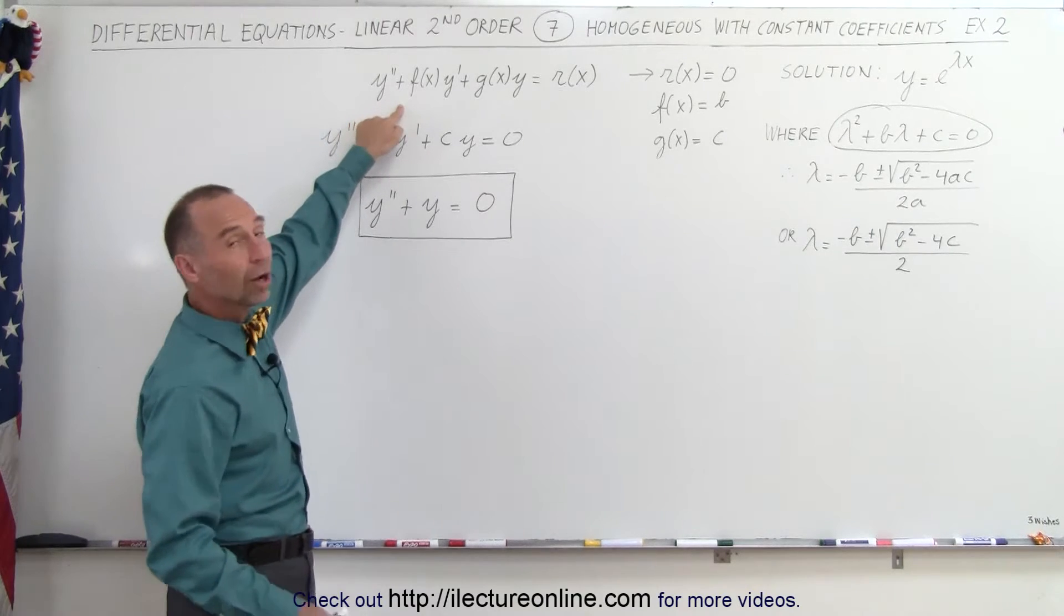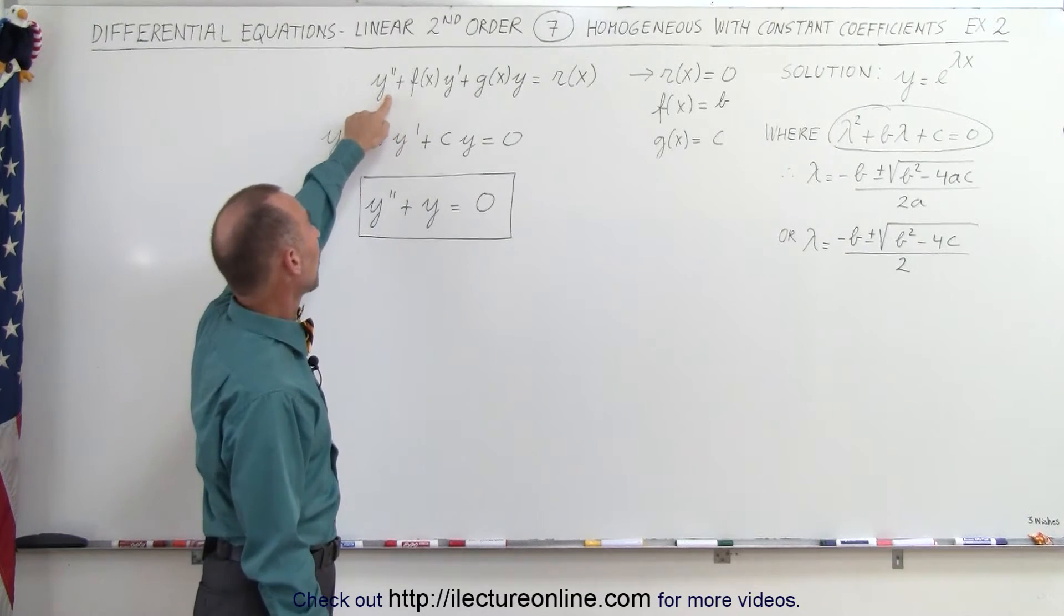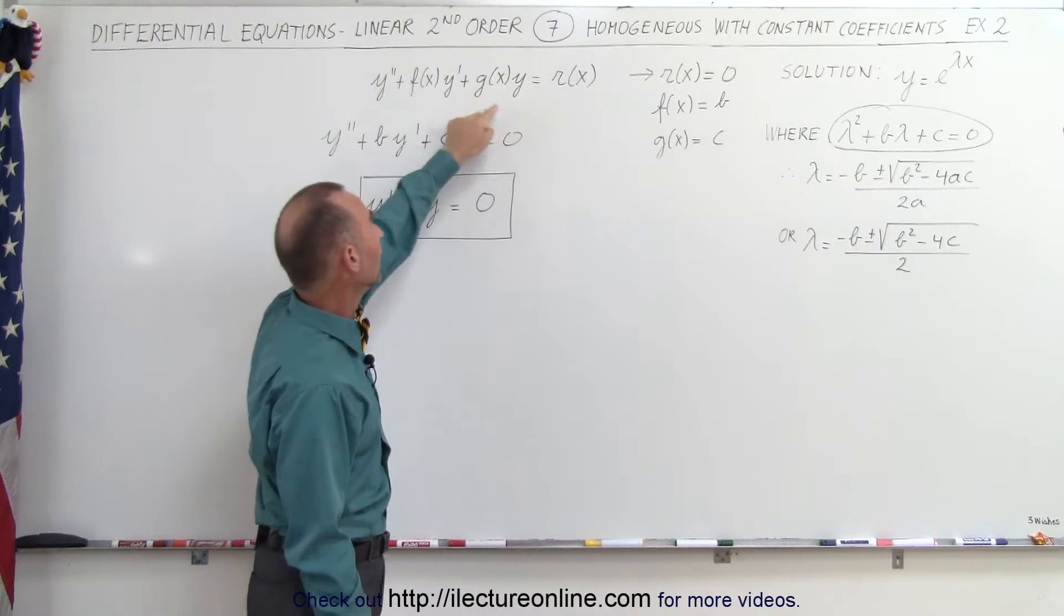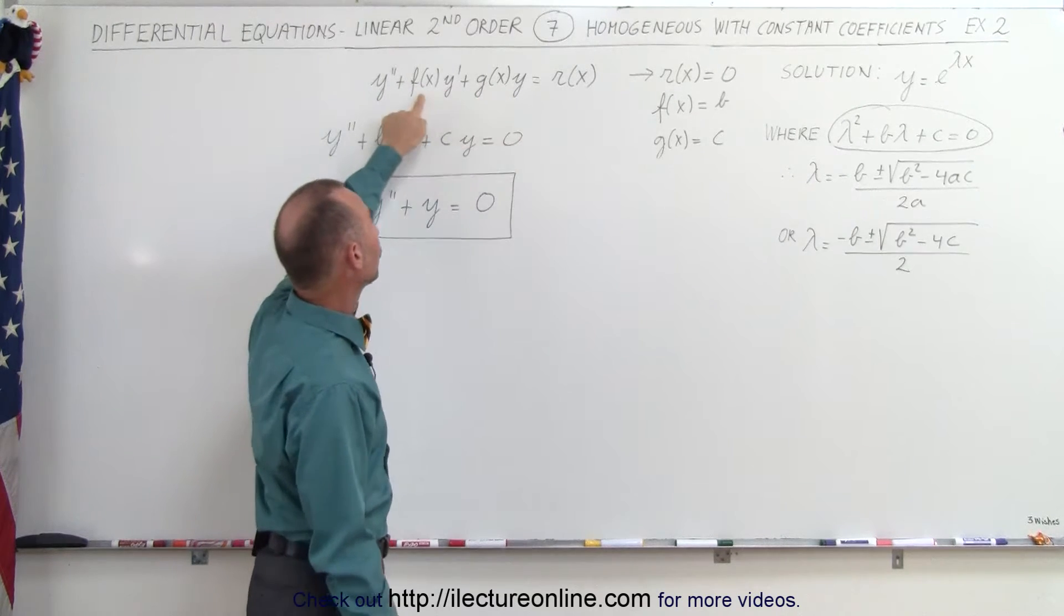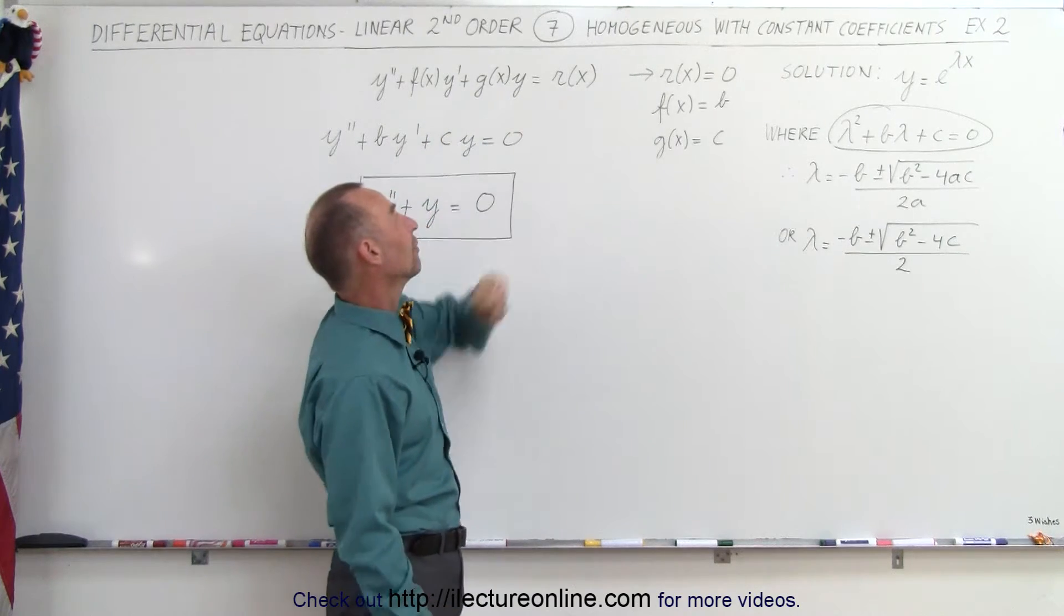Here's the general format of a second-order linear differential equation. That one has all three terms: y double prime, y prime, and y. In front of y prime and y, we have two functions of x, f of x and g of x, and on the right side we have a third function of x, r of x.